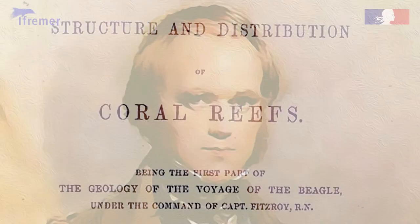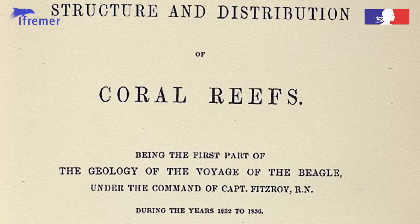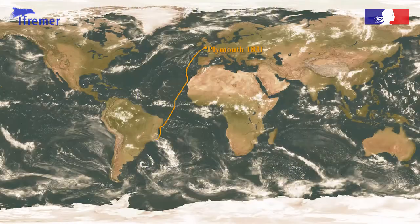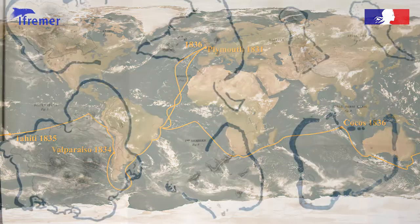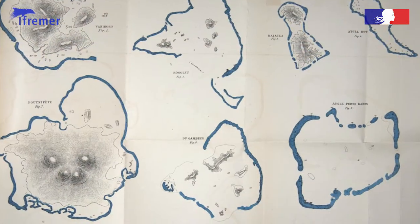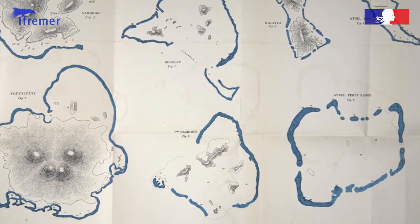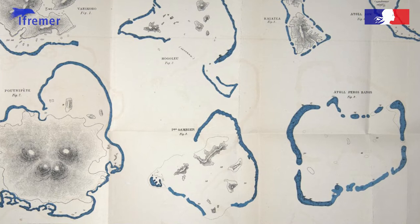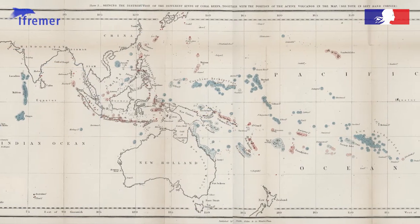Darwin's theory on the formation of coral reefs and atolls was published in 1842, six years after his legendary voyage aboard the British survey ship HMS Beagle. During the five-year voyage, Darwin assembled information from existing, surprisingly accurate nautical charts into a single map showing the global distribution of coral reefs.